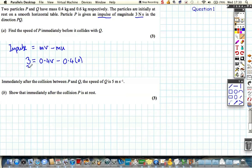That gives us a very nice equation, 3 is equal to 0.4V, where V is the velocity after the impulse, and that tells us that the impulse has caused P to start moving with a velocity of 7.5 meters per second, or ms minus 1.